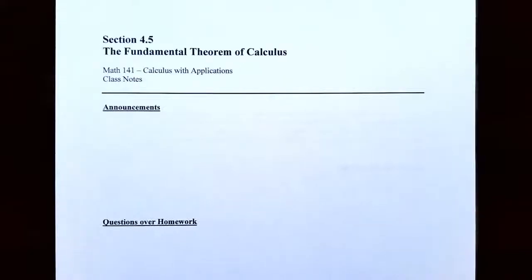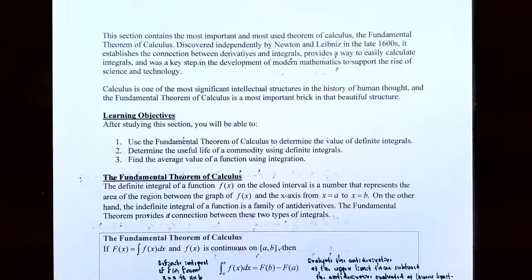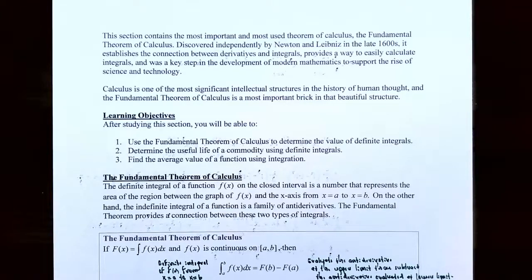Hi everyone, it's Professor Permanent, and today we're going to talk about the Fundamental Theorem of Calculus. In the last section, we talked about how to find the area under a curve bounded by the x-axis between x equals a and x equals b on a closed interval. We found that we can find the area if it's a nice geometric figure, or we approximated the area using Riemann sum rectangles, and we know that if the number of rectangles increased to infinity, we find the actual area under the curve.